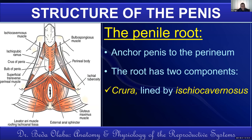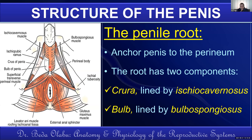There is also the bulb of the penis, which holds the penis to the perineal body, also known as the central tendon of the perineum. The bulb attaches from the perineal body to the corpus spongiosum of the shaft. The muscle that lines the bulb of the penis is known as bulbospongiosus. That is the penile root — holding the penis to the perineum.